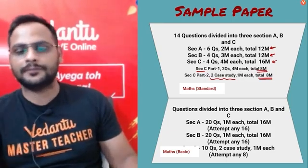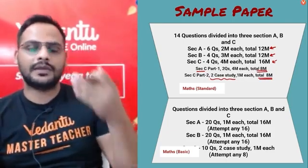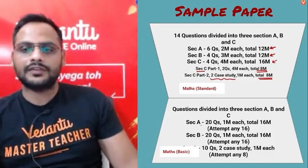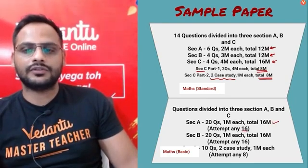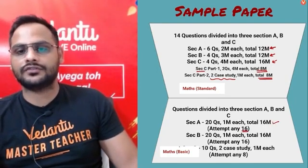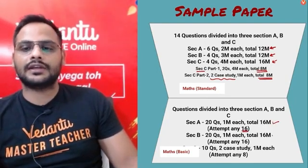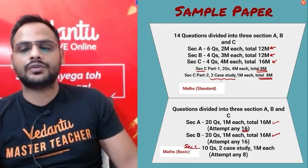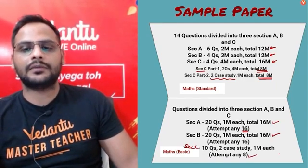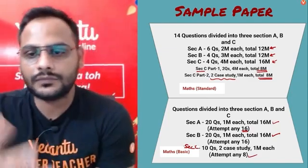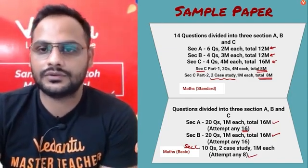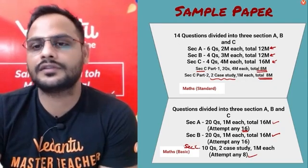For basic maths the paper pattern is very different. Section A has 20 questions, one mark each, out of which you attempt any 16. Section B also requires you to attempt 16 out of 20 questions. Section C has 10 questions — two case studies, one mark each — and you attempt any eight.